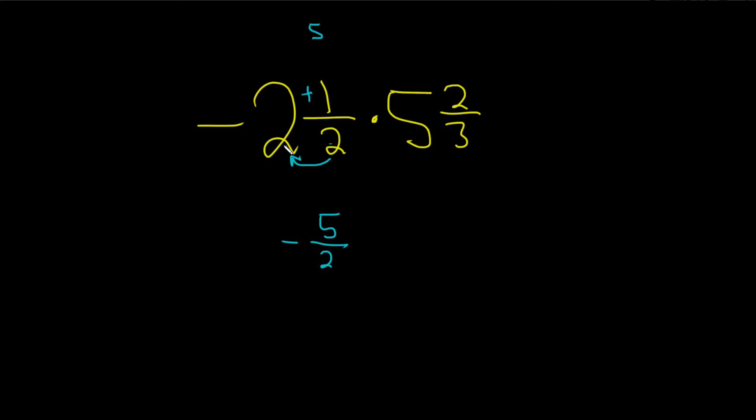Again, you multiply these two. So 2 times 2 is 4. And then you add the 1. That gives you 5. Same thing here. 3 times 5 is 15. And then you add the 2. So 15 plus 2 is 17 over 3.